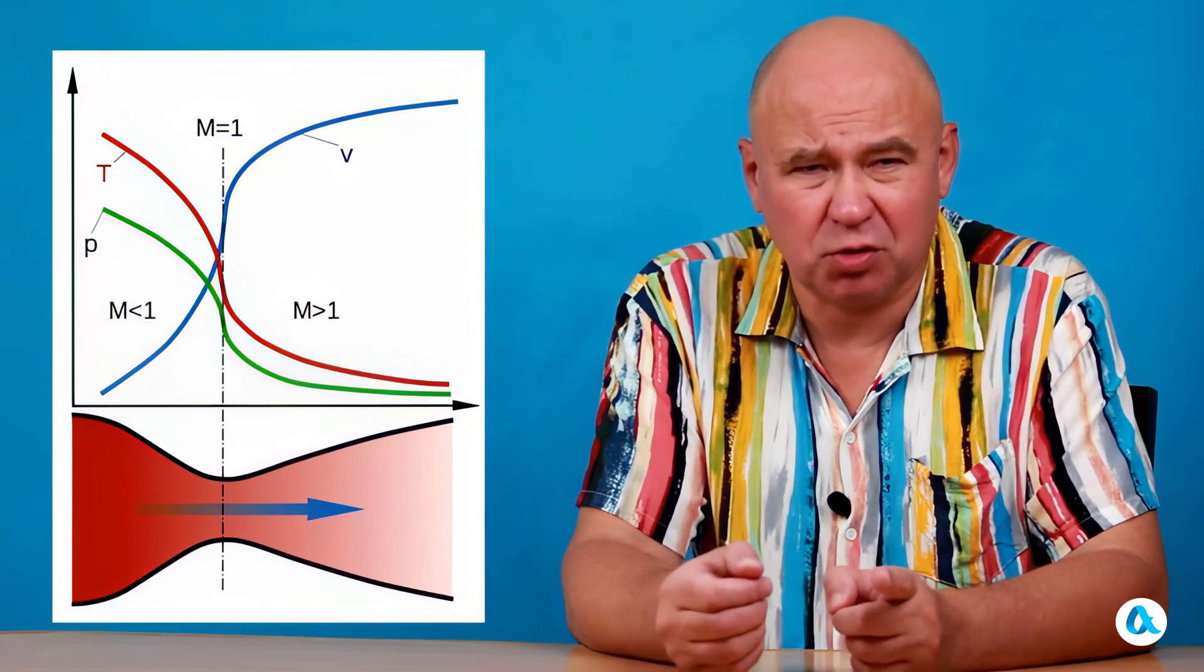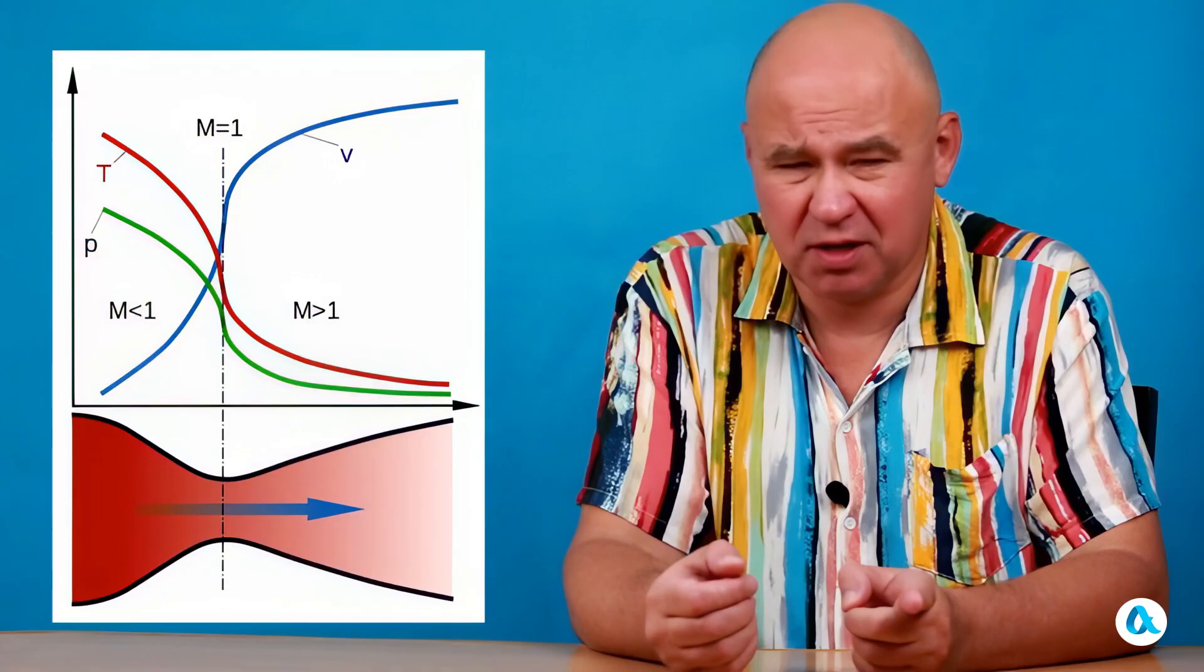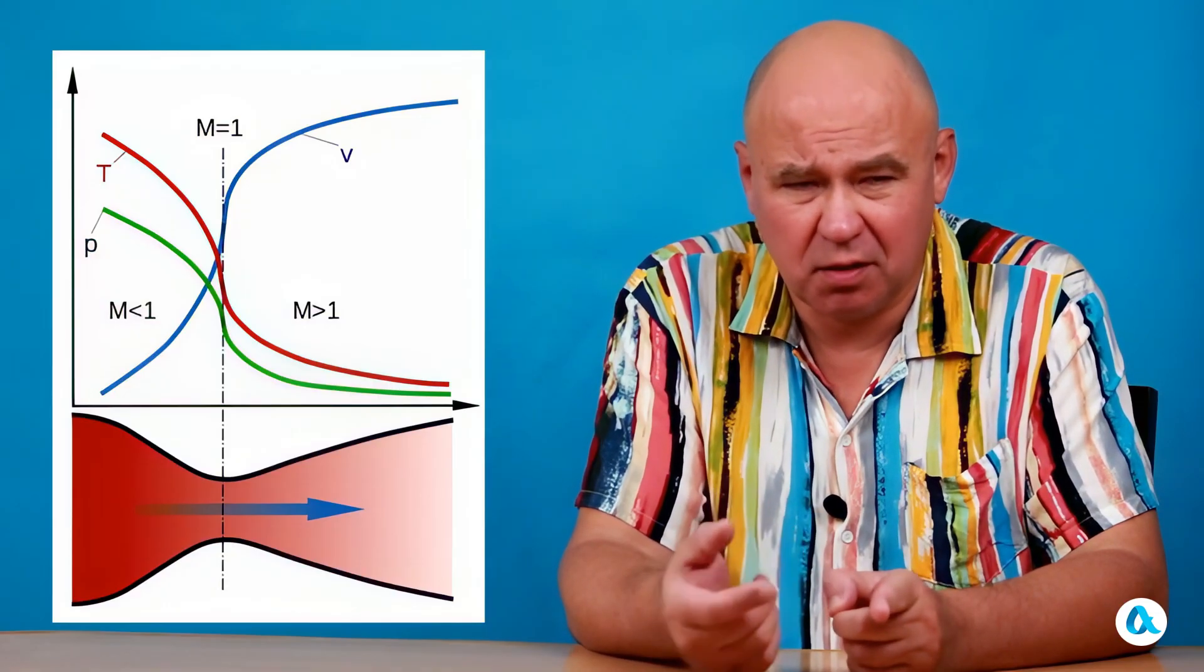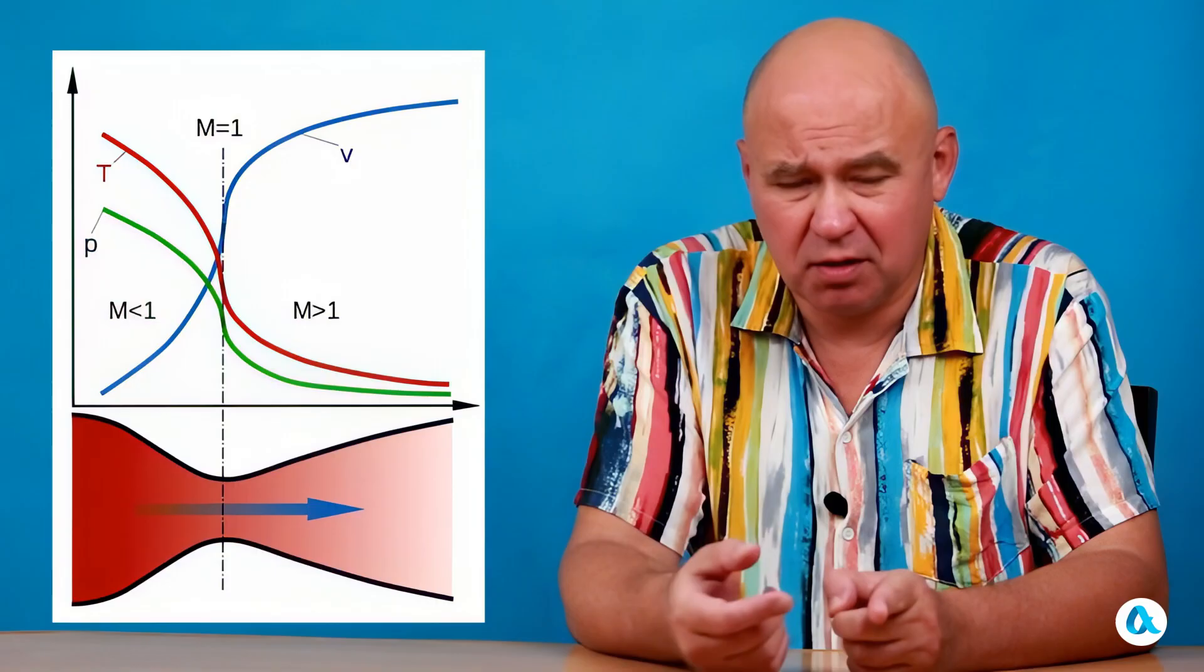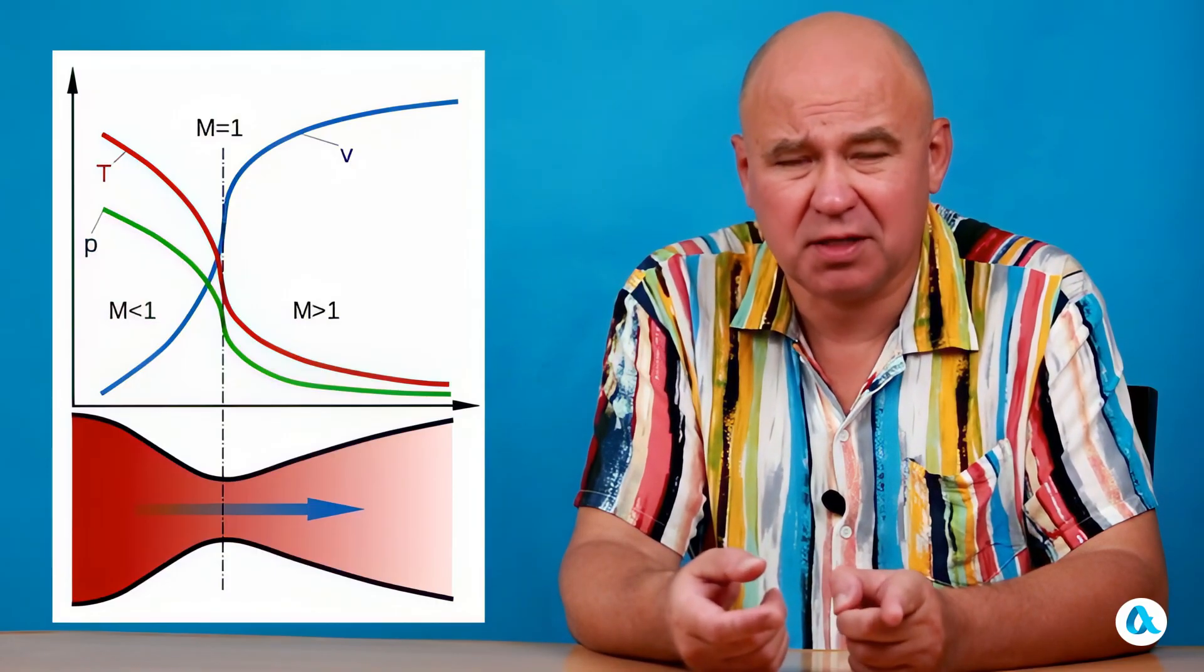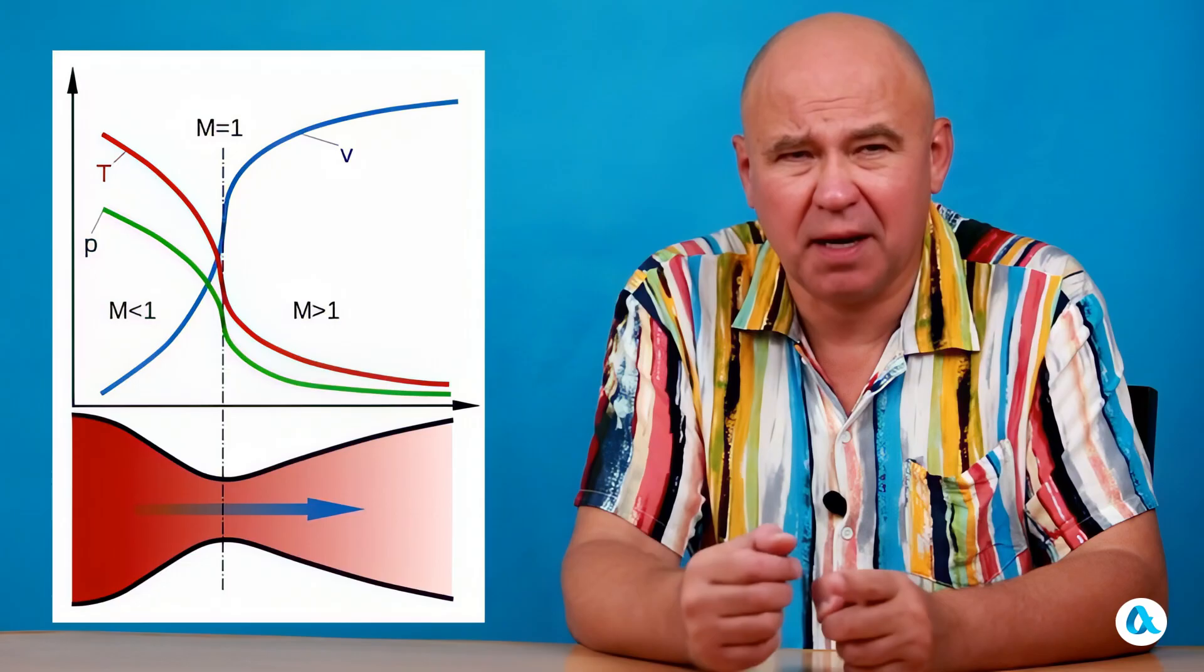Now, let's turn our attention to the green pressure graph and see how pressure is related to velocity. The velocity increases because the gas moves from a region of high pressure to a region of low pressure. We can see that the pressure drops by many times.